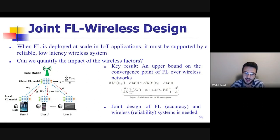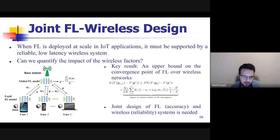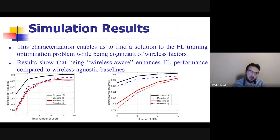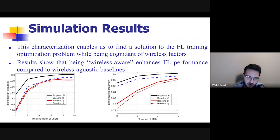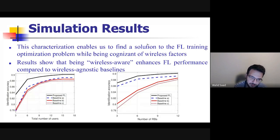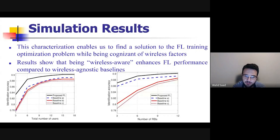This co-design means we look for the most accurate FL performance while also ensuring the wireless channel is managed to sustain it — what we call joint design of FL and wireless. The optimization problem jointly optimizes FL training while also optimizing resource block allocation and power control. Using this theoretical result, the problem becomes tractable and solvable with the Hungarian method. Our simulation results show that a wireless-aware approach significantly outperforms baselines with only raw federated learning, resource allocation, or power control.